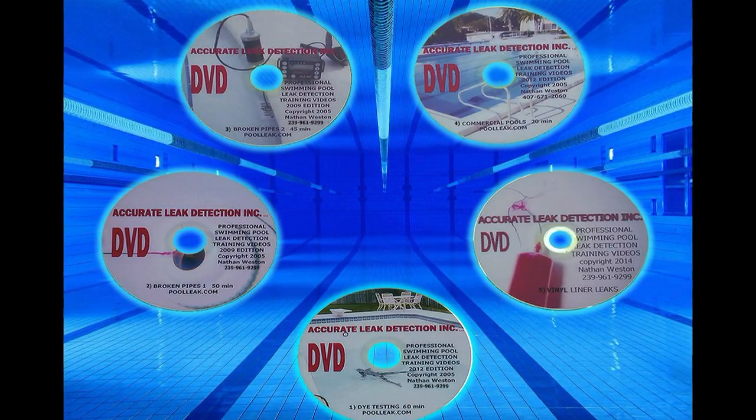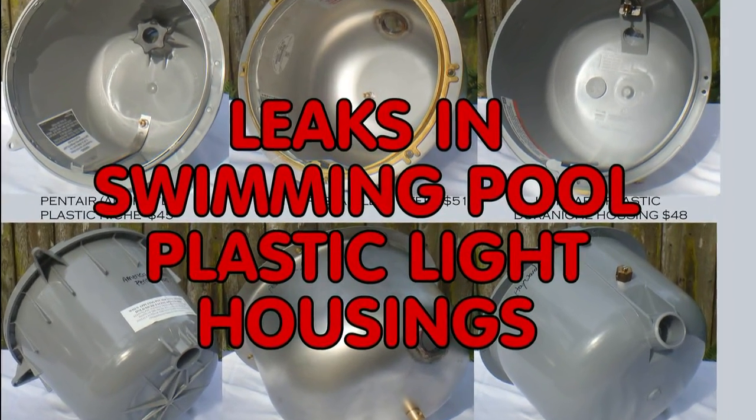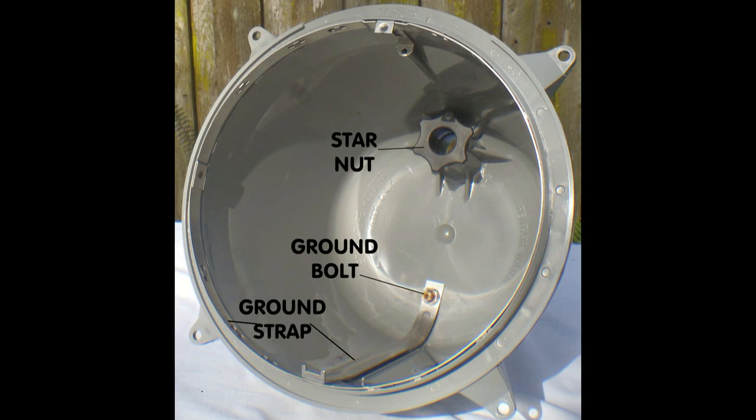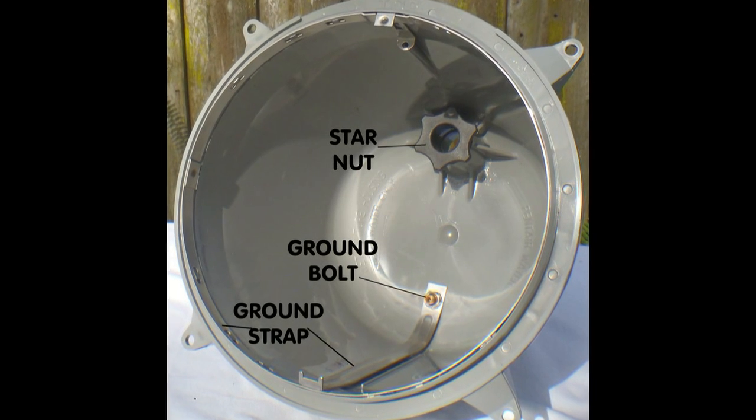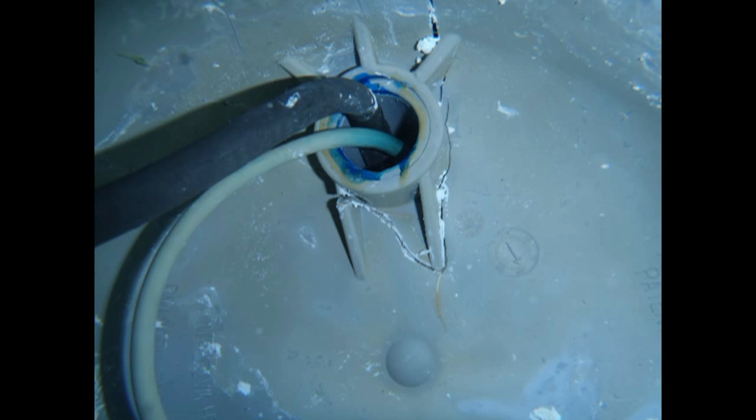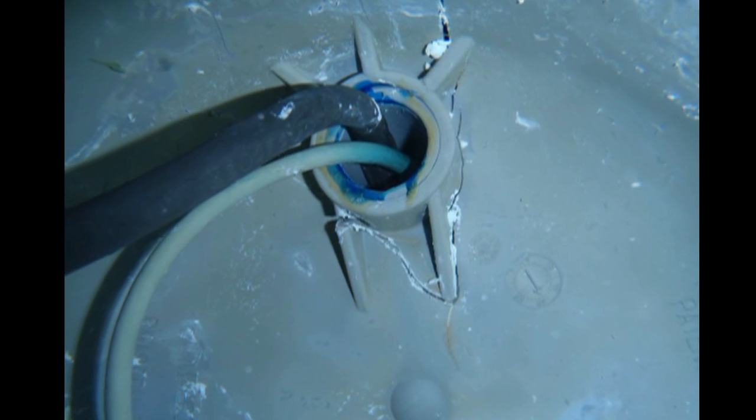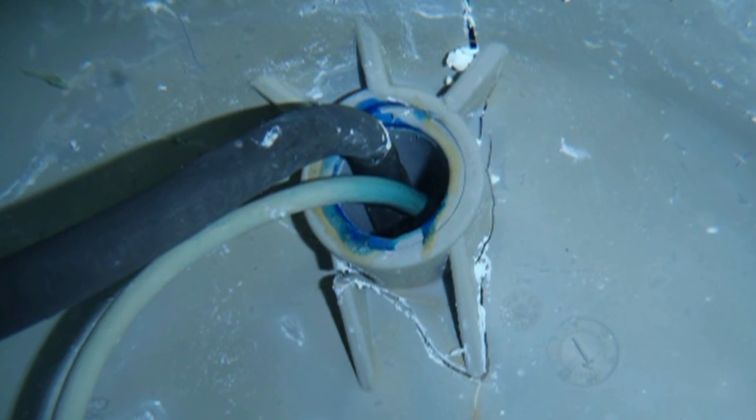Lastly, our new video on cracked plastic light housings is finally up on YouTube. It shows the epidemic of leaks caused by this poorly designed plastic light housing that's been in use since the early 90s. Help get the word out about this problematic pool fixture.